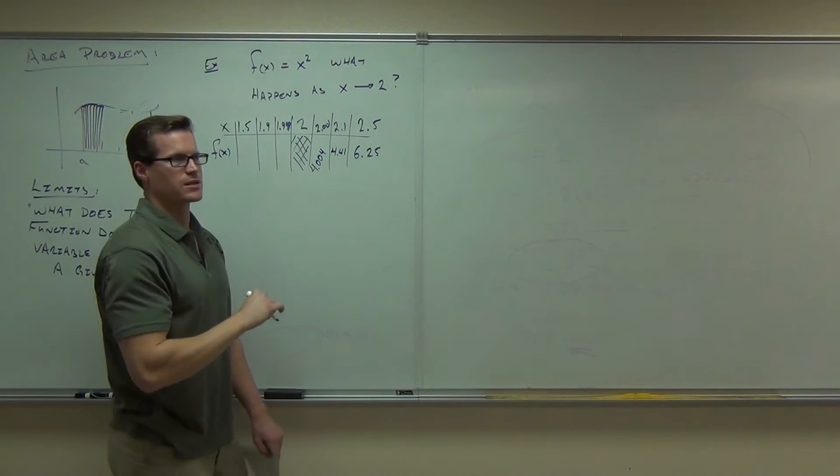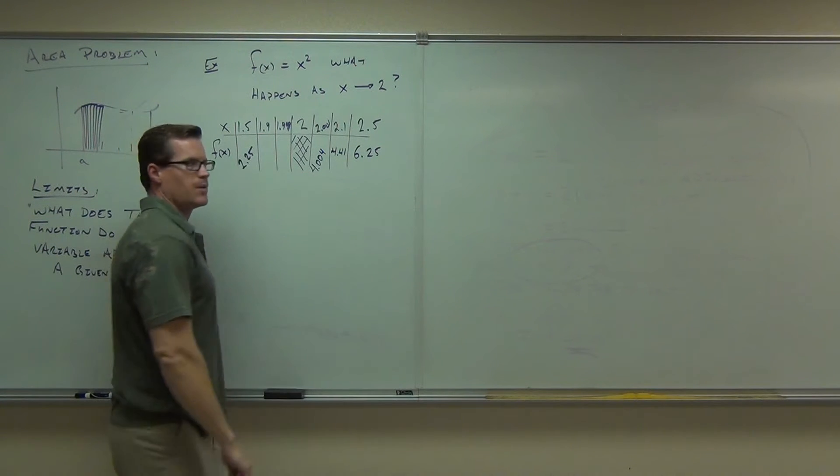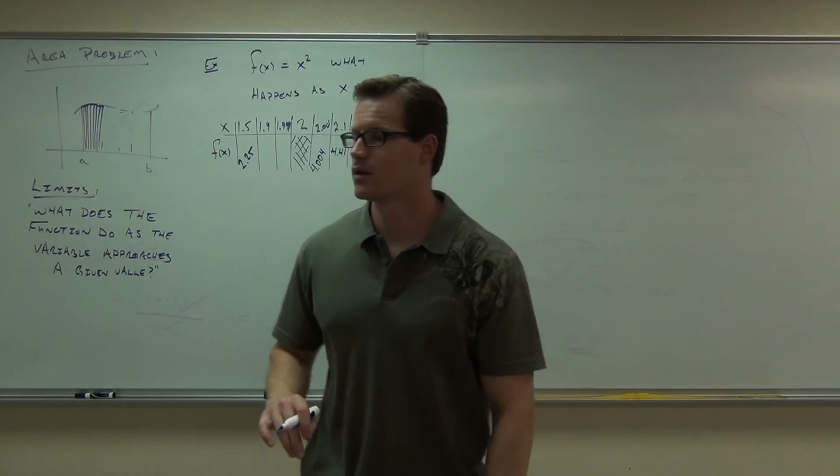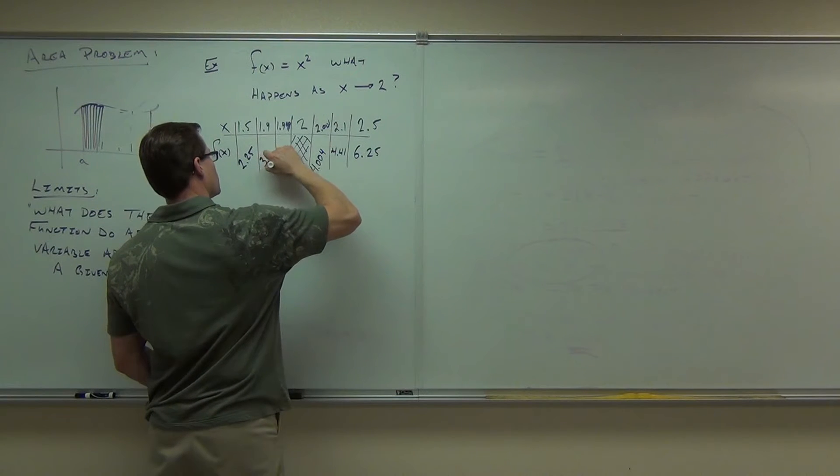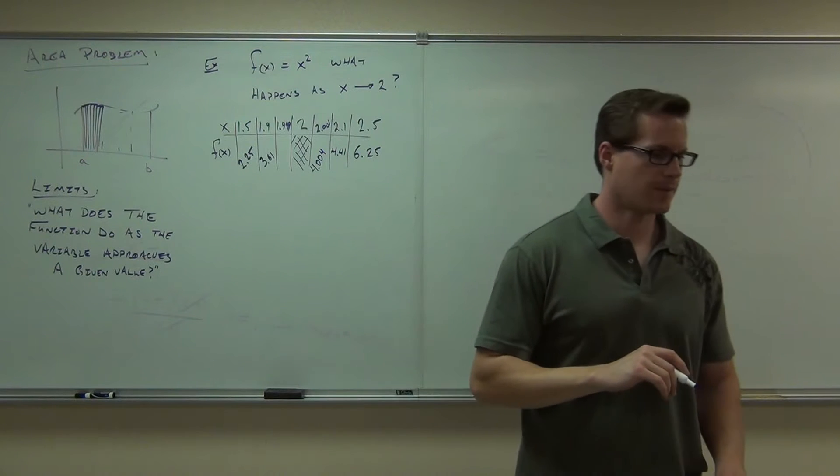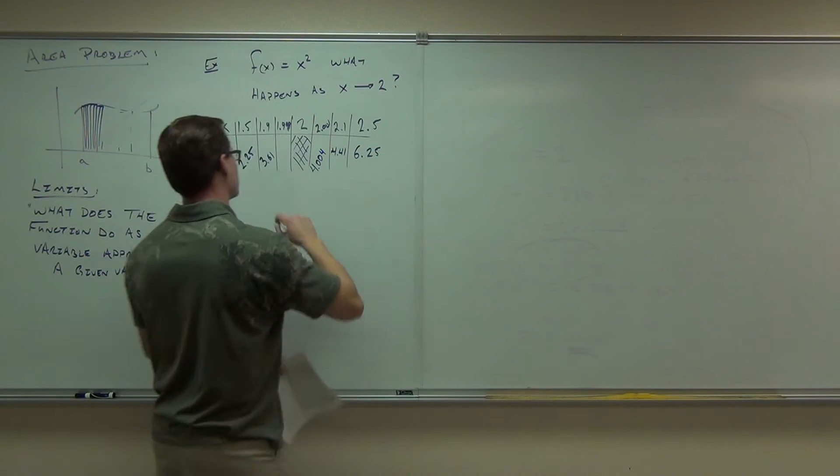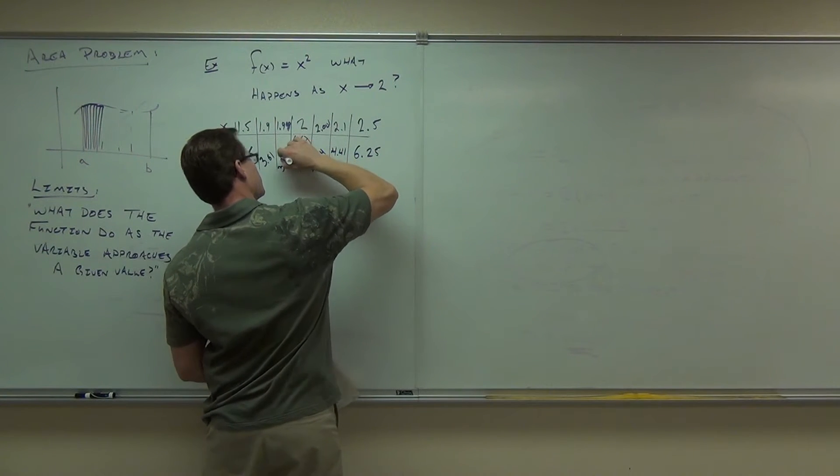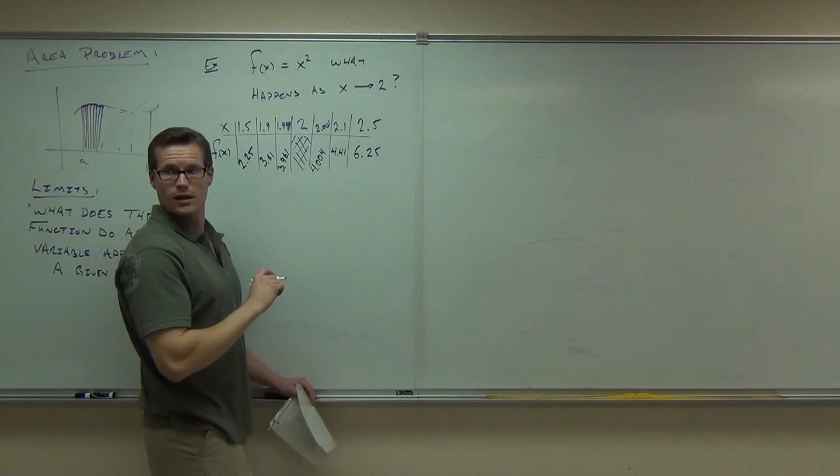How about 1.5? That's 2.25, isn't it? How about 1.9? Plug in 1.9. What do you get when you do that x squared? 3.61. And now do 1.999. What do you get? How much? 3.9601. Yeah? Yeah. Okay, cool.